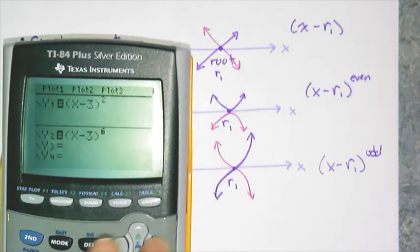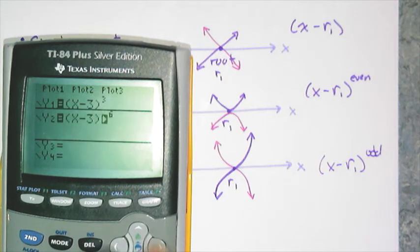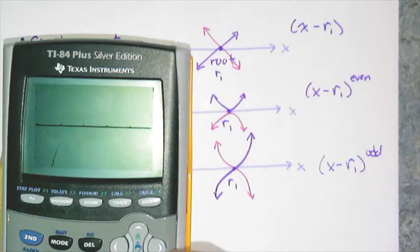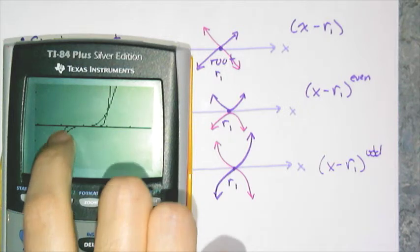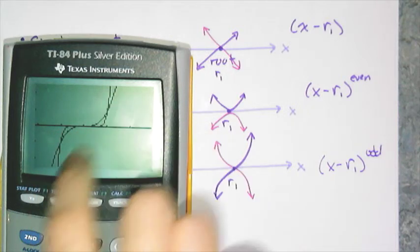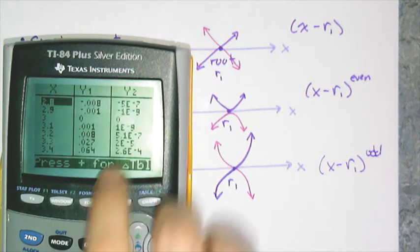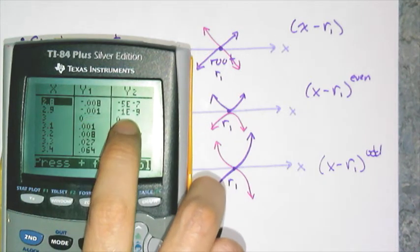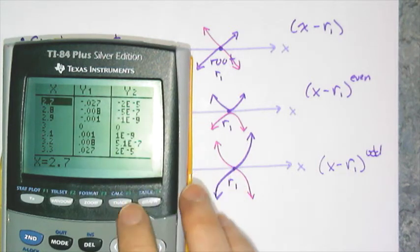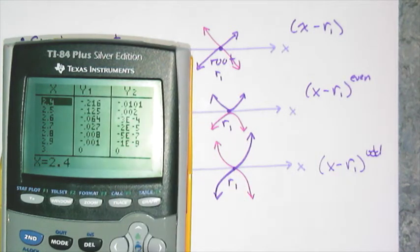The same thing happens if I change this to a cube versus a ninth. Graphing close to the root, the cubic is one graph, and the ninth degree hugs the x-axis much closer as it goes through that root. Looking at the table, the ninth degree numbers stay really close to zero for a lot longer. The higher the degree — for even or odd — it's going to hug the x-axis longer than it would if it were just a square or cube.